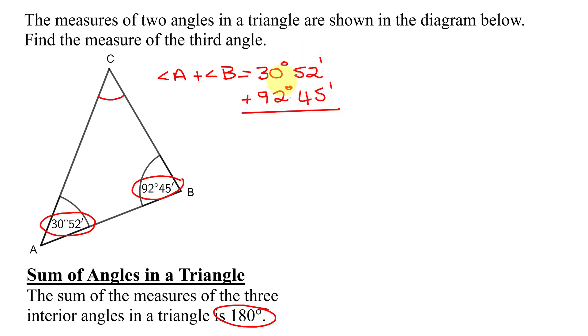Now, everything's lined up. I can add 2 and 5 is 7, 5 and 4 is 9, so that's 97 minutes. 0 and 2 is 2, 9 and 3 is 12. So, I have 122 degrees, 97 minutes.